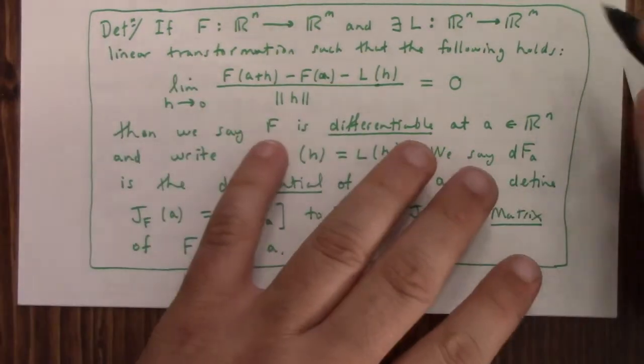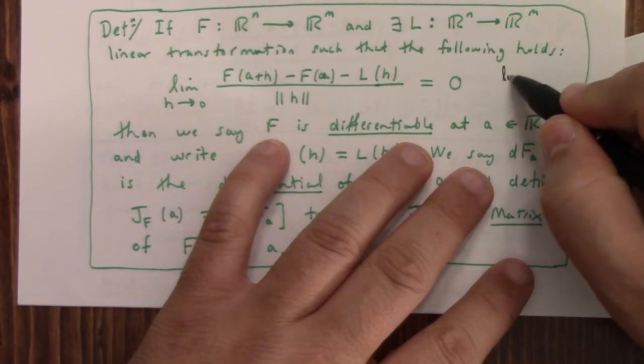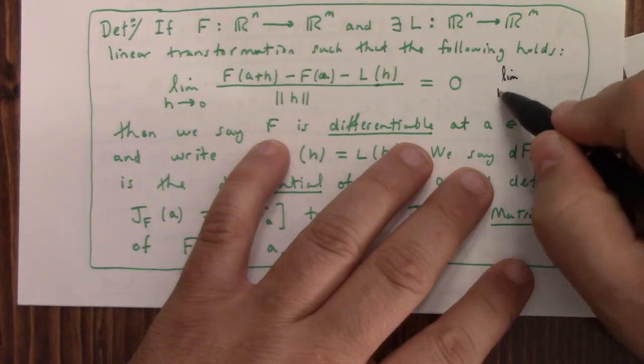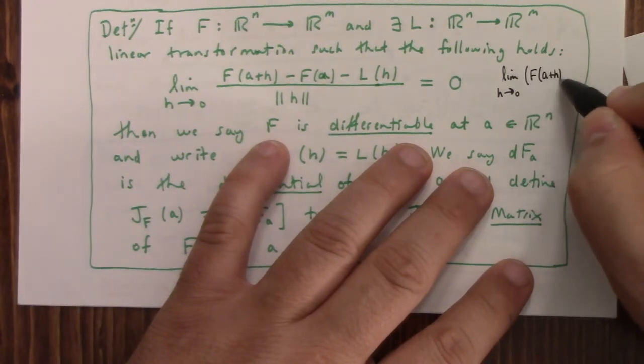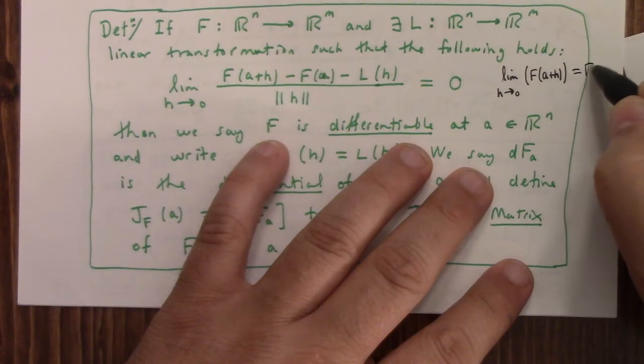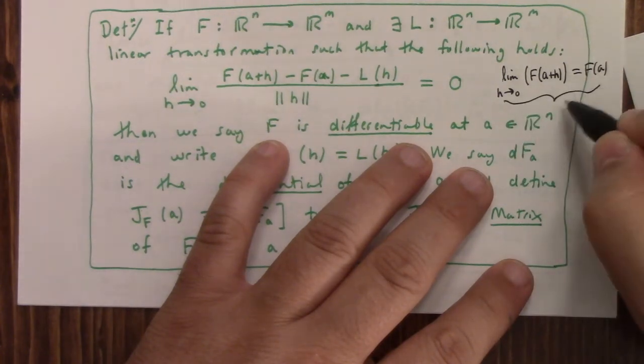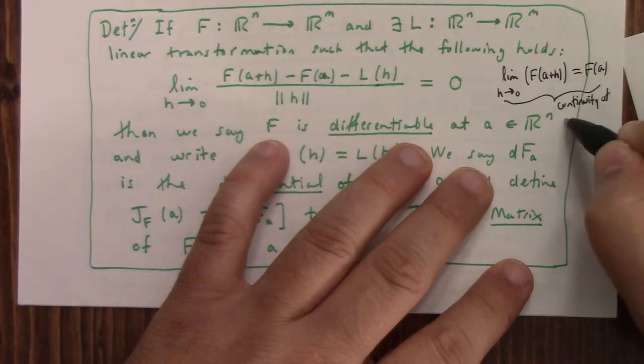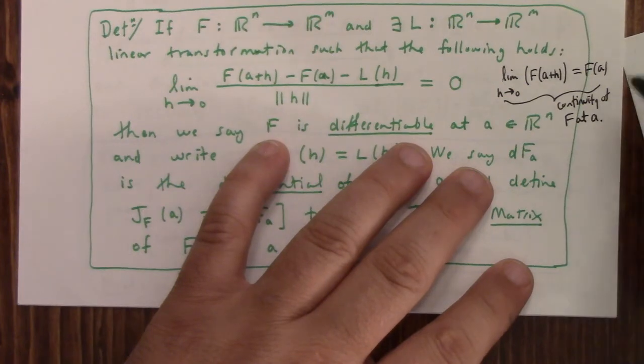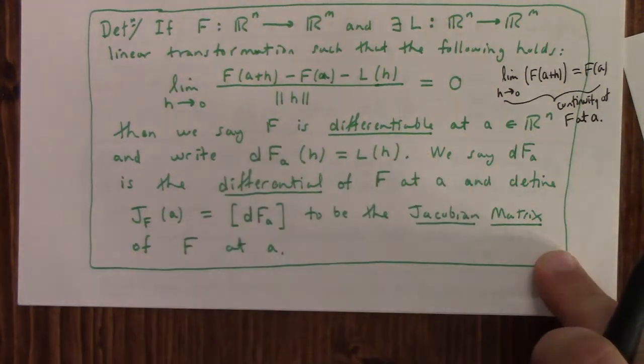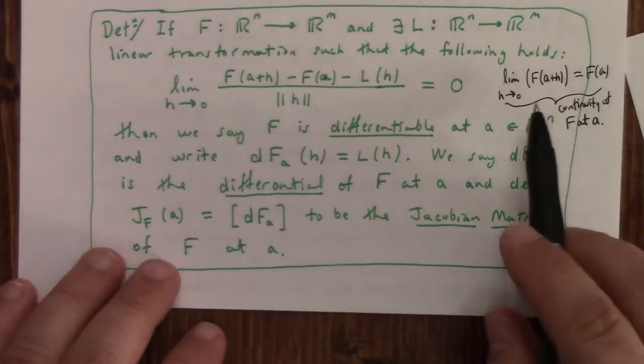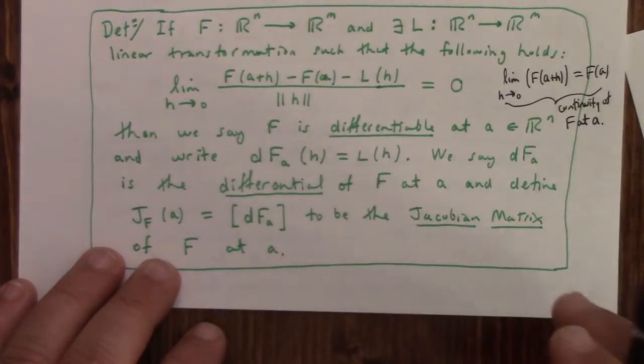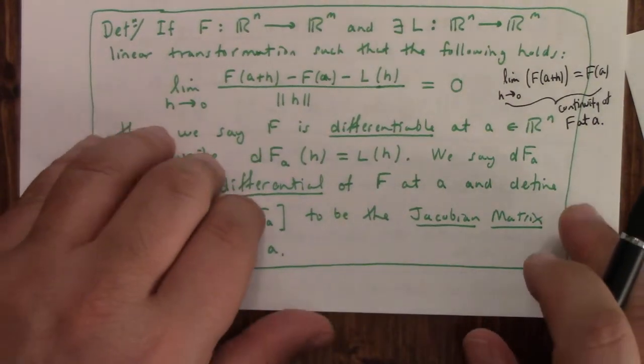Continuous in this context would mean showing that the limit as h goes to zero of, like, for our purposes here, continuous should mean that the limit as h goes to zero of F(a+h) is equal to F(a). If you can show that, that would demonstrate continuity.